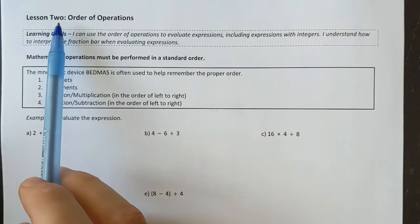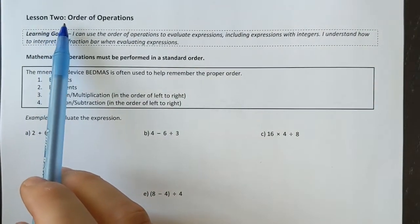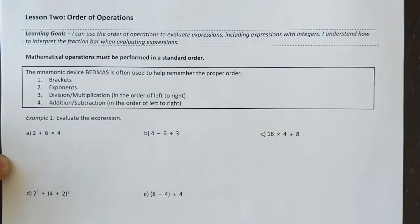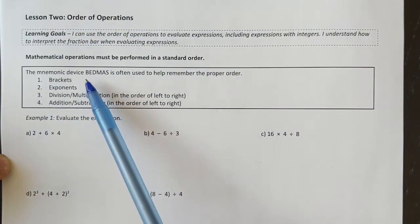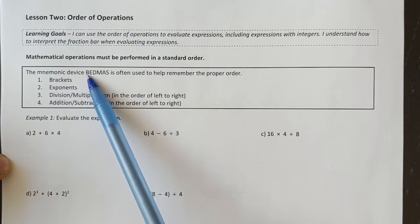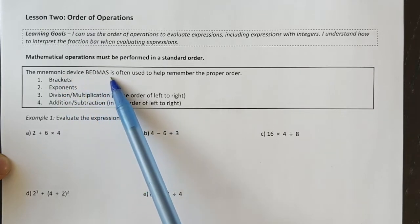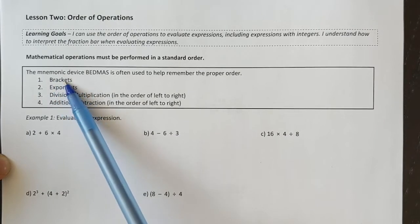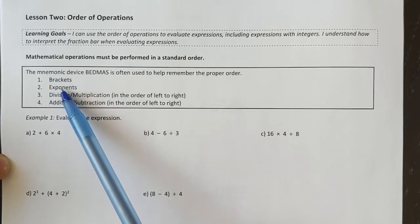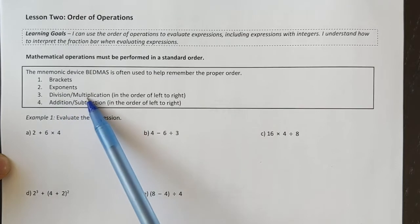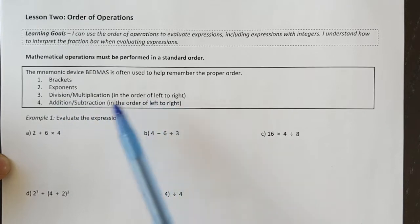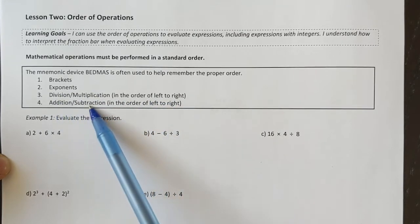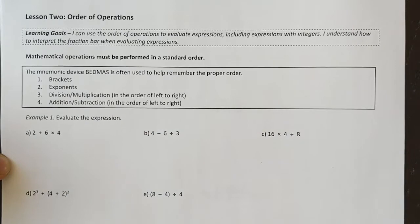In the second lesson of the number sense unit we're going to learn about order of operations. The mnemonic device we use is BEDMAS: do your brackets first, then exponents, then division and multiplication from left to right, and addition and subtraction from left to right.